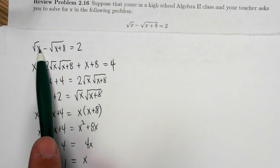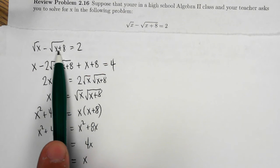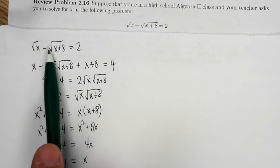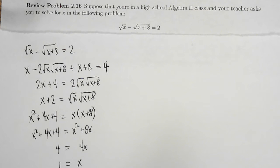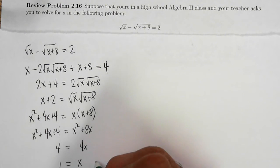But clearly if I plug in 1 back in I get square root of 1 minus square root of 9. And square root of 1 minus square root of 9 is not equal to 2. It's equal to negative 2. So I have no solutions. So this is extraneous.